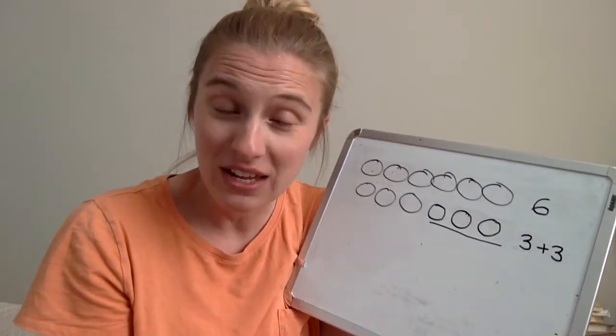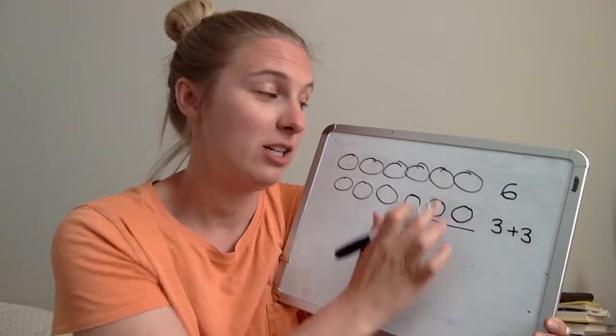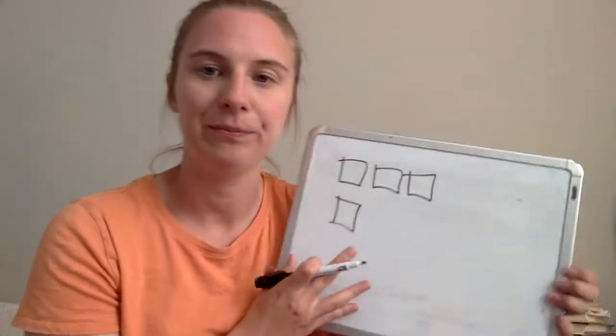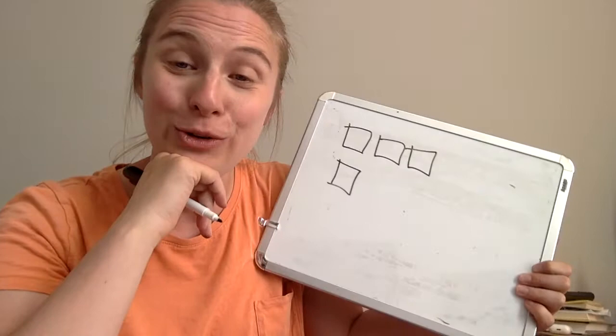You can also think about it, kindergartners, as you're finding the other partner to make six or seven or whatever is at the top. Let's do another one and use another strategy to find how many more you need. I like drawing the line. That's what I like. Let's do this one.